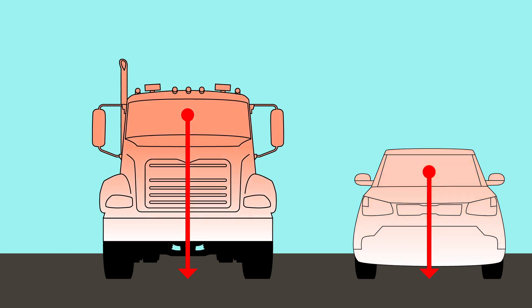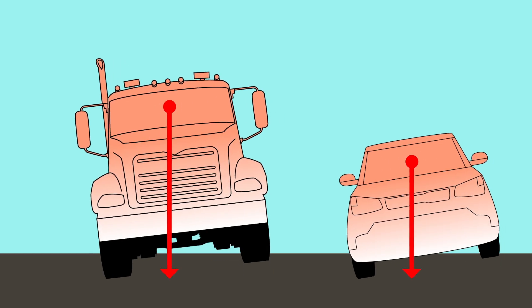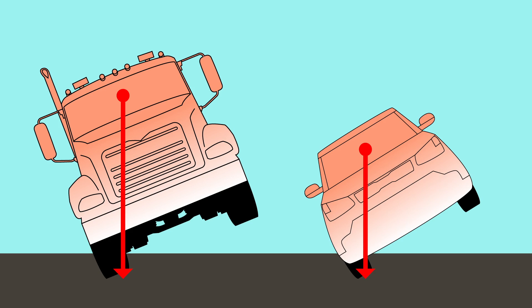Taller vehicles, such as trucks and SUVs, are more top-heavy. They have a greater chance of flipping over if they take a turn too fast.